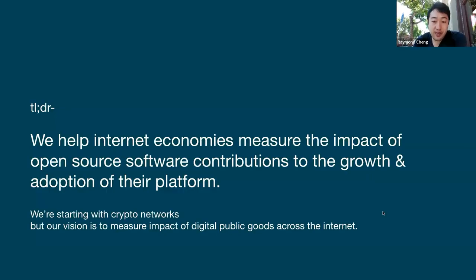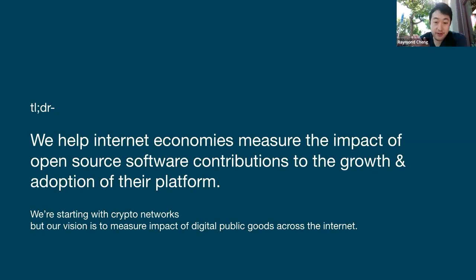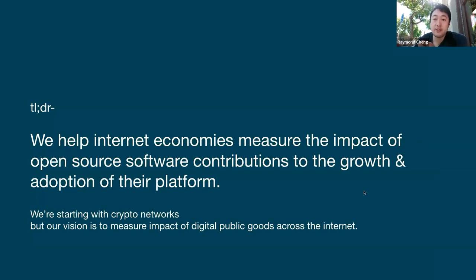We're helping these internet economies measure the impact of open source software. One of the directions we're currently focusing on is crypto networks. We know that they're investing a lot of money into open source software — on the order of $100 million a year currently being distributed to different open source projects in that ecosystem. What's really interesting about crypto networks is that all the user analytics for applications are typically also open source, so we can measure the impact all the way out to the number of users it's touching, predominantly because any products built in the crypto space are built on top of the blockchain, which means we can analyze that in the open.